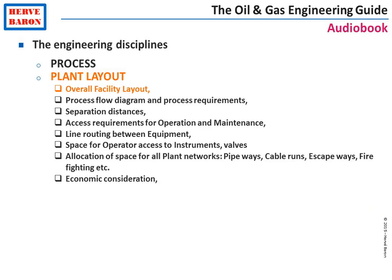The overall facility layout is primarily dictated by safety. Two means are employed to reduce the risk to the minimum possible level. The first is to adequately select the relative positions of the various plant areas. The second is to provide safe separation distances between these areas. A proper layout and spacing can significantly reduce the consequence of a fire or an explosion.